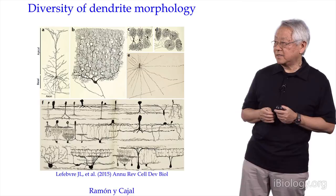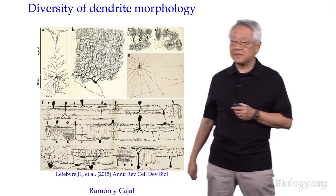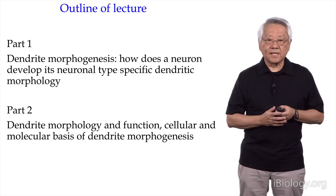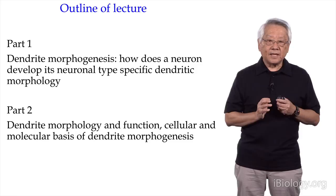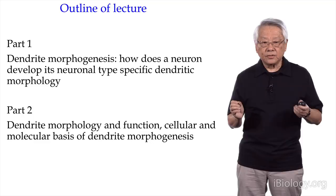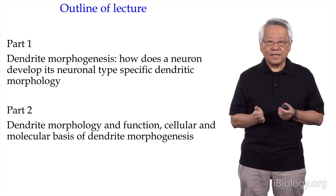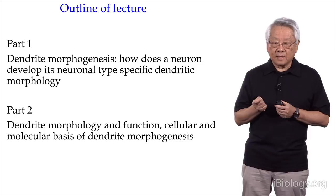My talk has two parts. In the first part, I'll discuss how a neuron develops its neuronal type-specific dendrite morphology. To really understand dendrite morphogenesis, we need to know the relationship between morphology and function. In the second part, I'll discuss the relationship of morphology and function, and then talk about the cellular and molecular basis of dendrite morphogenesis.